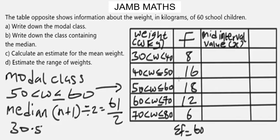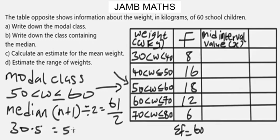So we need to find the cumulative frequency that contains position 30.5. Adding the first two frequencies: 8 + 16 = 24. Then 24 + 18 = 42. Since 42 is greater than 30.5 but 24 is less, it is the class with frequency 18 that contains the median. Therefore the class containing the median is 50 < w ≤ 60.